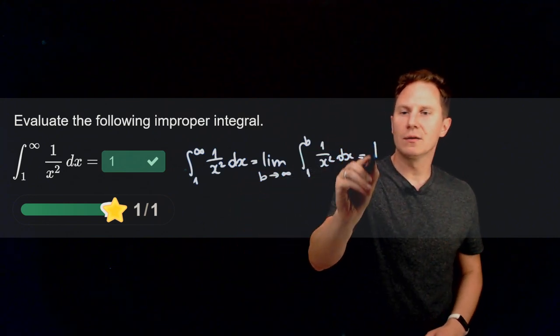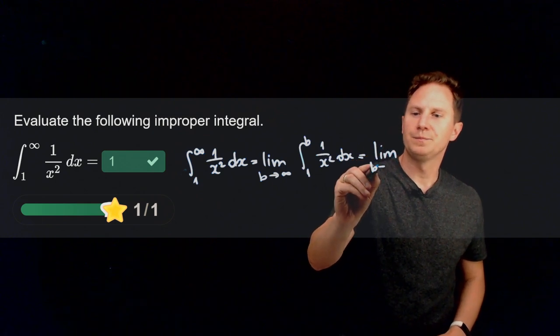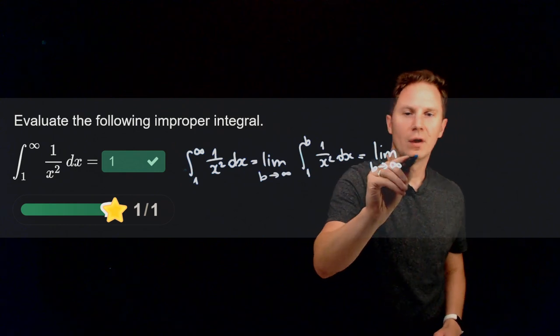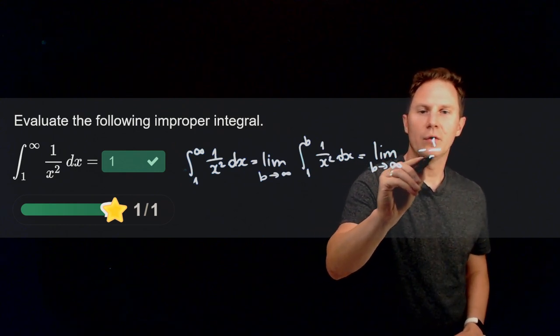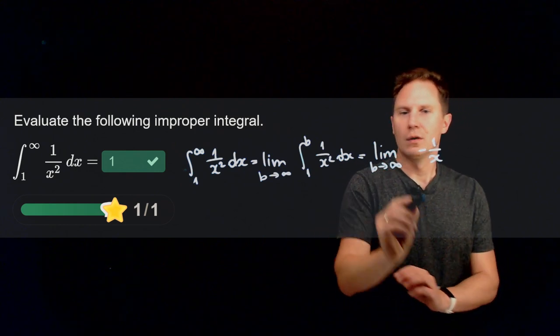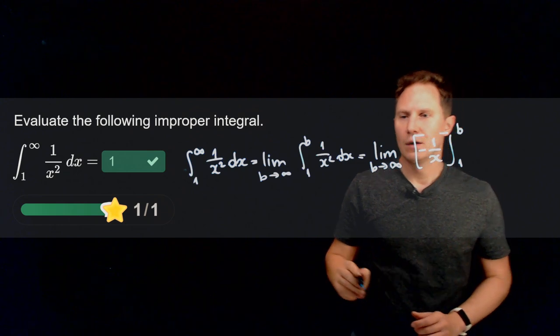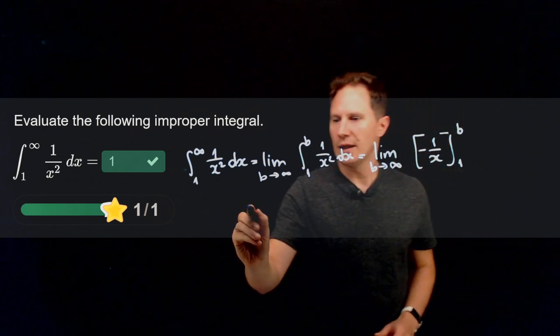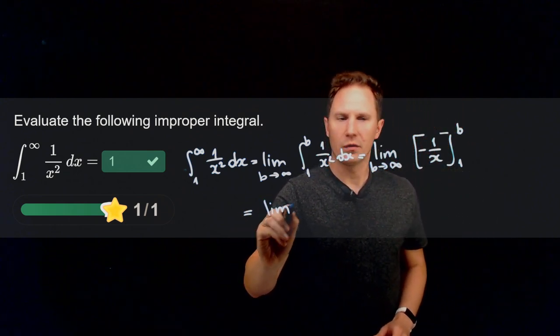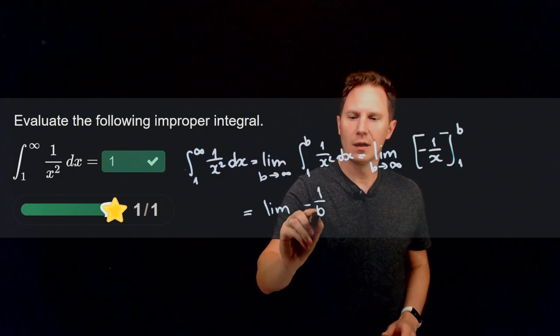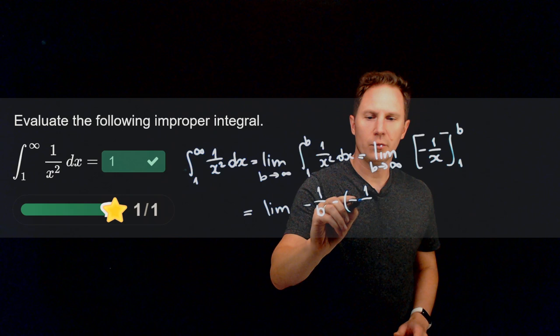Now this integral before taking the limit is negative 1 over x as x goes from 1 to b. So that net change is simply negative 1 over b minus negative 1 over 1.